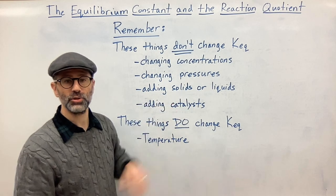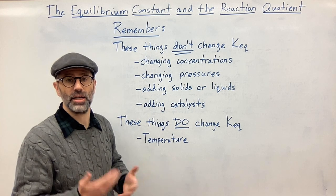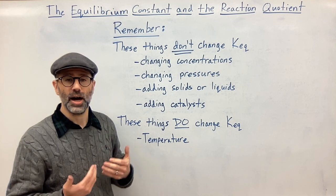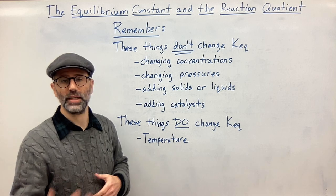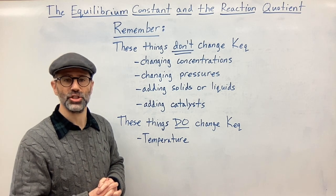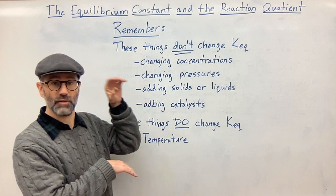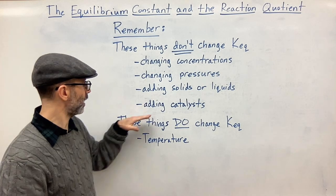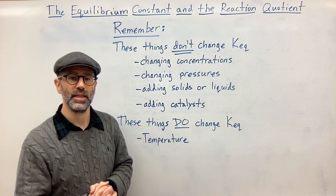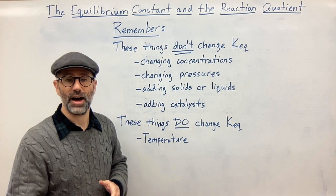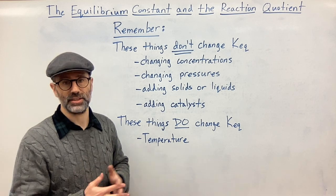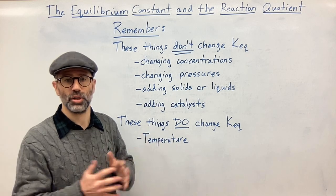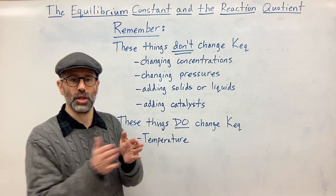Adding solids or liquids doesn't change the equilibrium constant because they don't have variable concentrations — their concentrations are constant. So adding more solid or liquid to your reaction vessel will not change K-eq; the ratio of products over reactants stays the same. Adding a catalyst also doesn't change K-eq. It only changes the rate constant and how quickly you get to equilibrium, not the equilibrium constant itself or the equilibrium point.